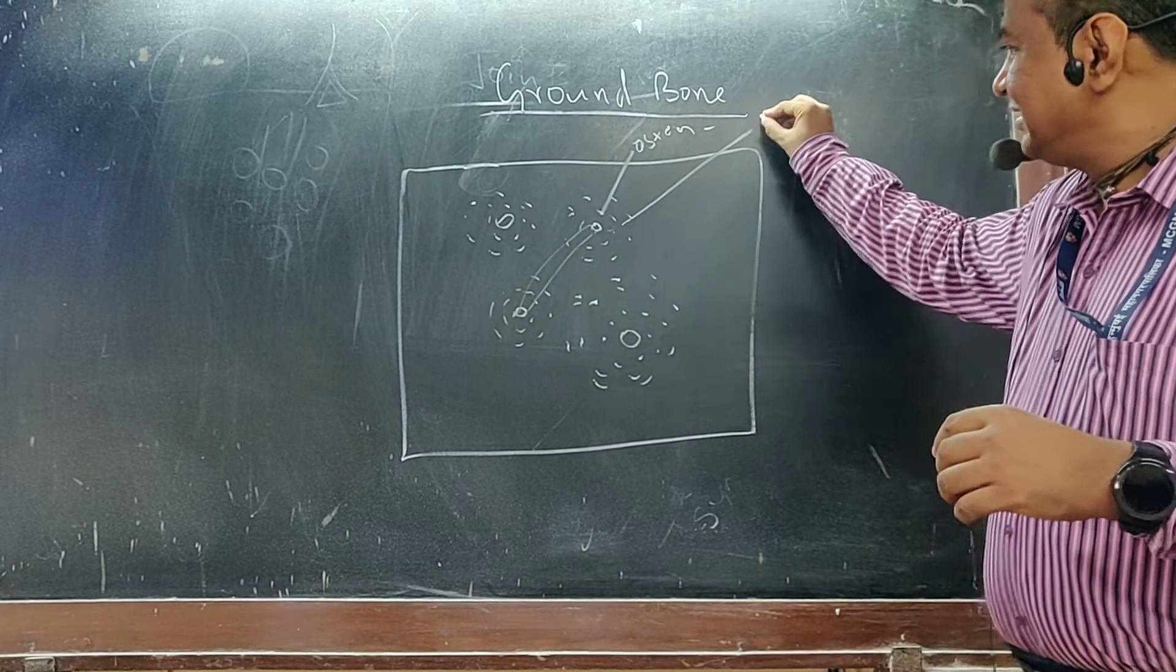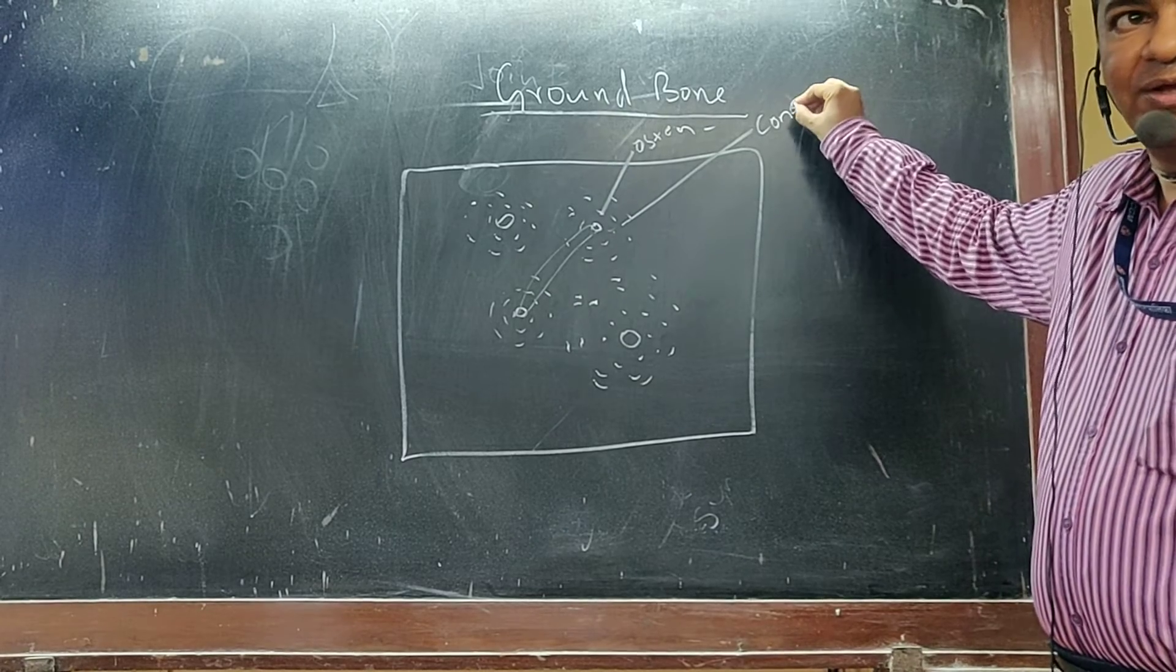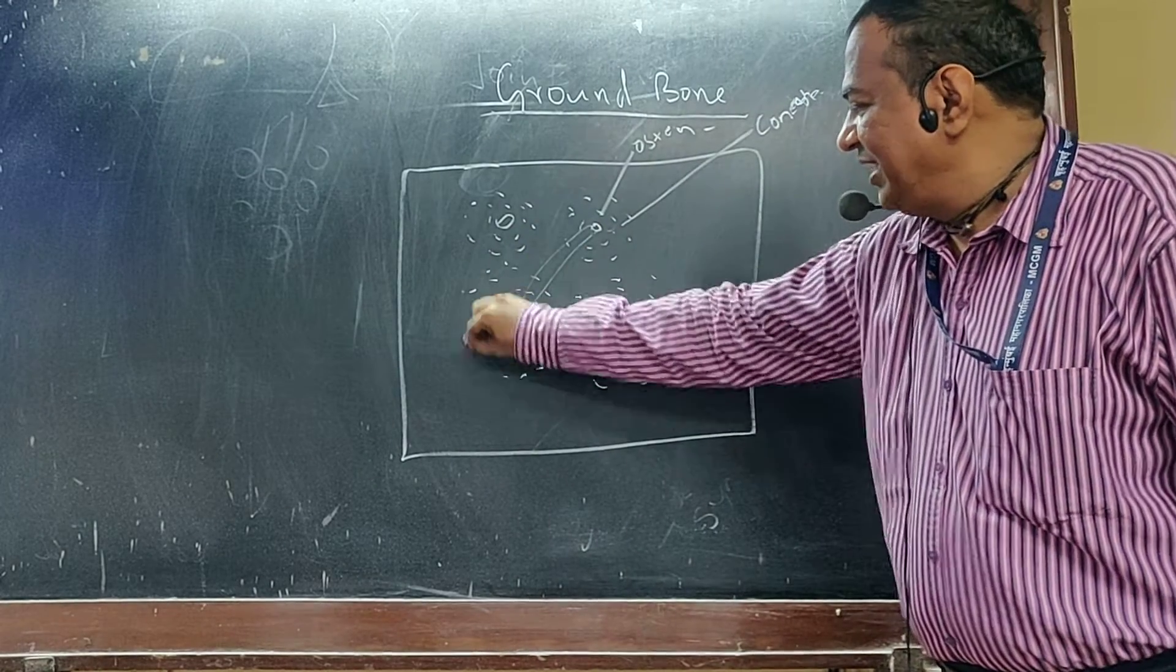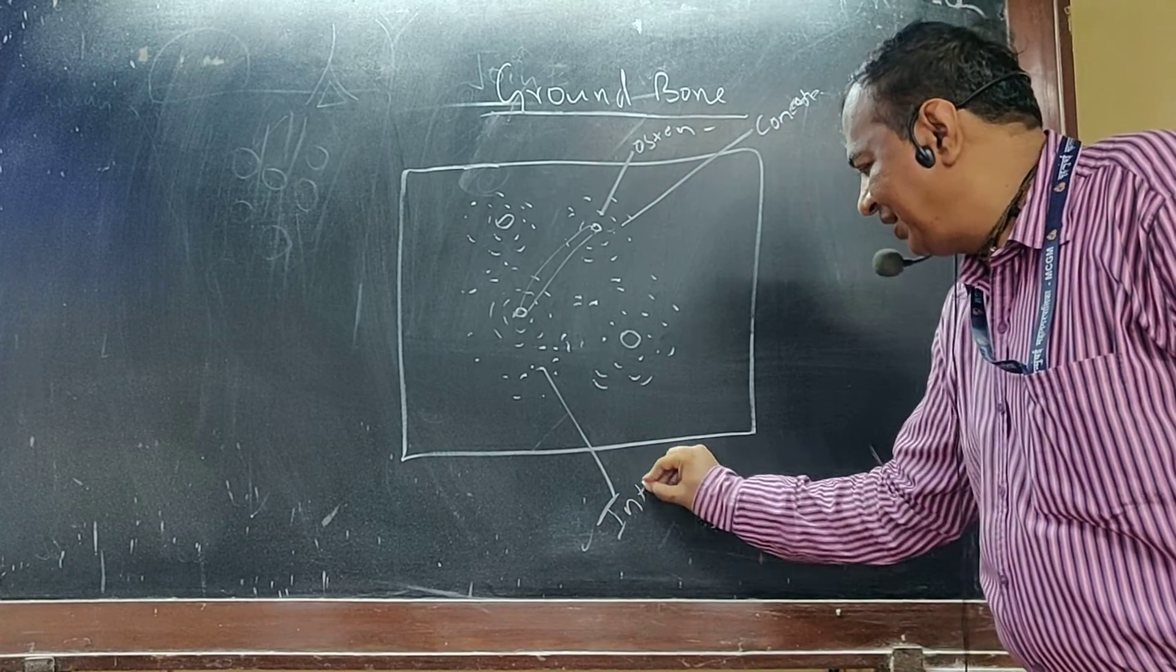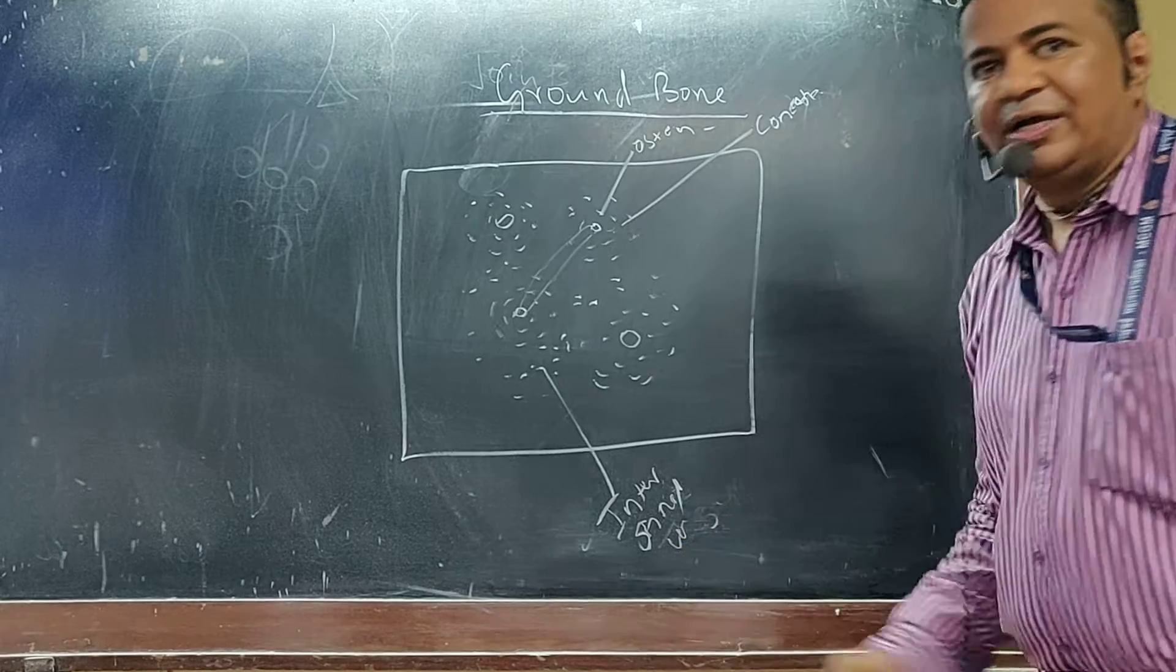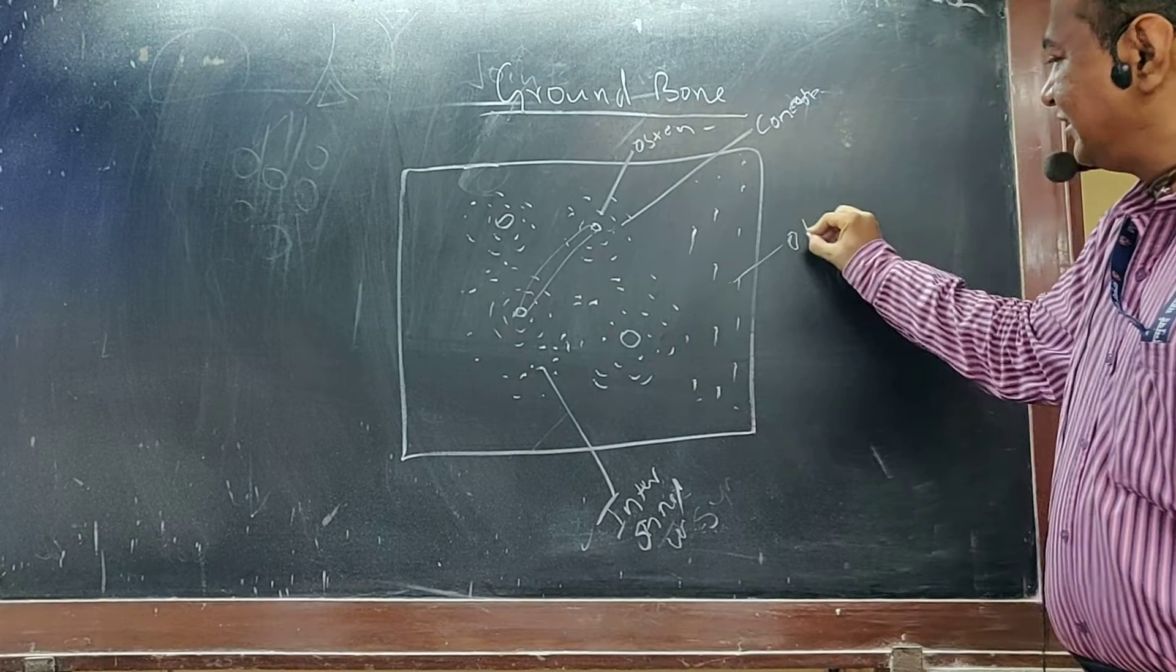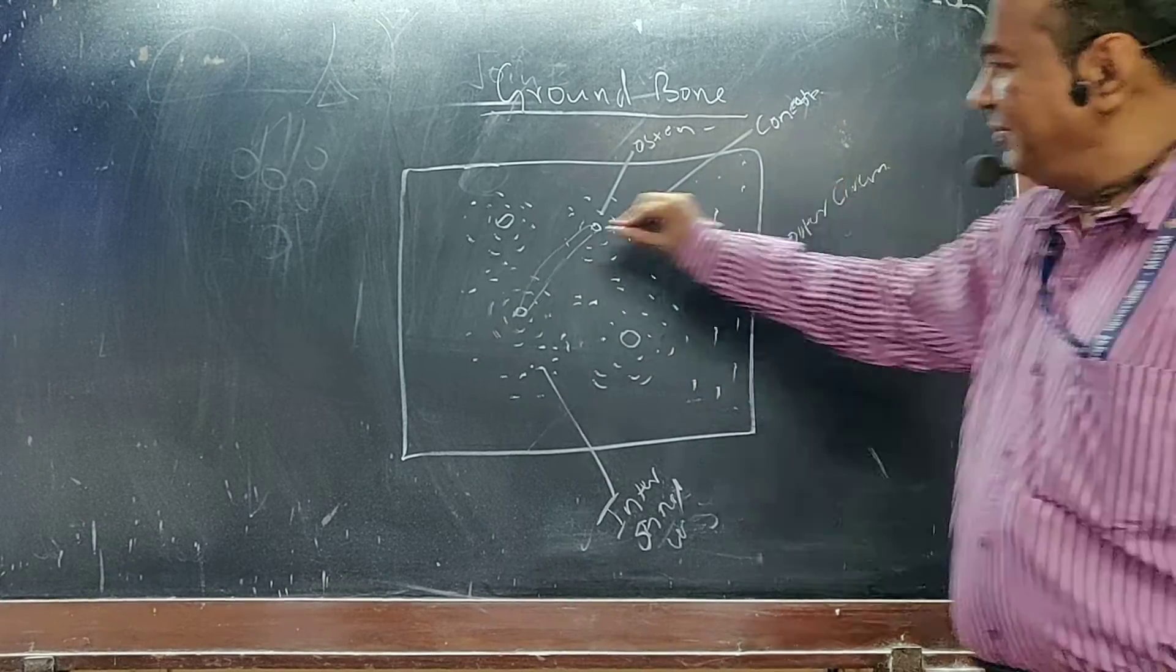There are four types of lamellae: concentric lamellae, then interstitial lamellae, then inner circumferential lamellae, then outer circumferential lamellae.